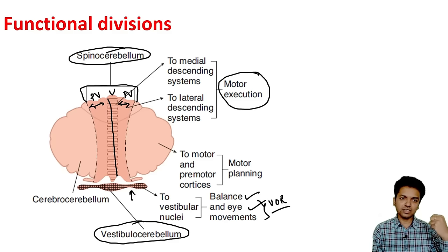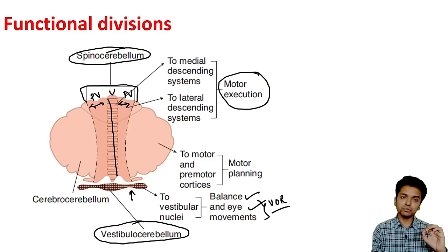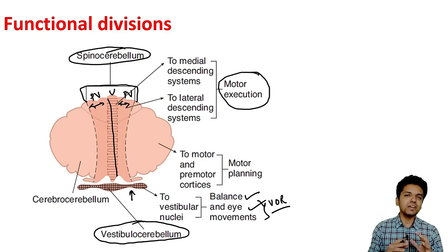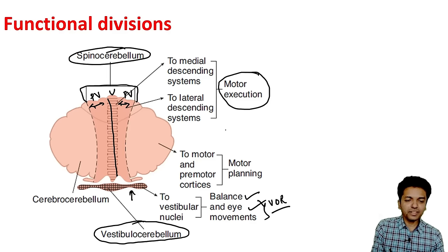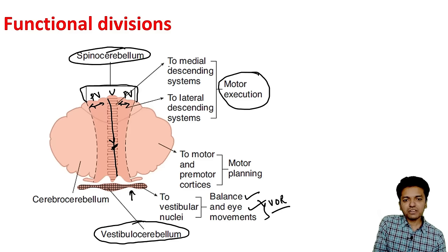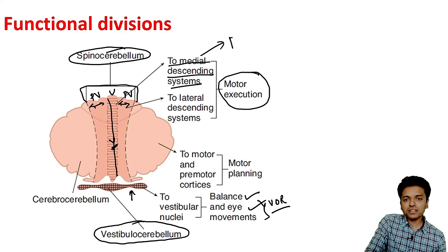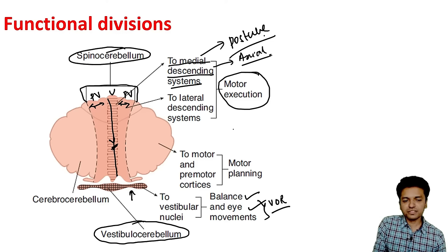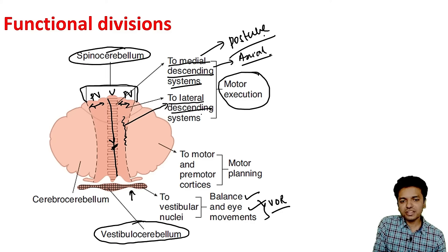The fibers from the vermis of the spinocerebellum descend to the medial descending system, which is concerned with maintenance of posture via the axial muscle group. The fibers from the paravermal portion descend to the lateral descending system, which is concerned with fine motor movements.